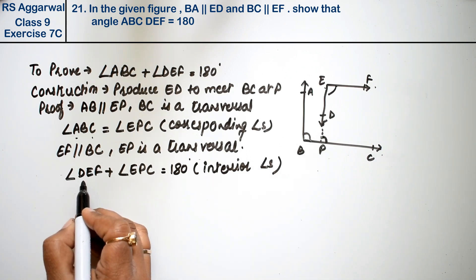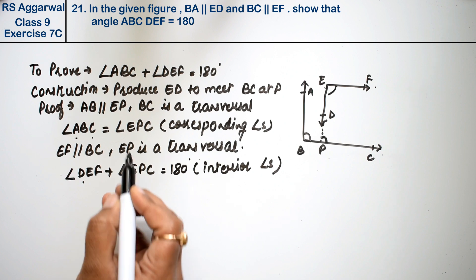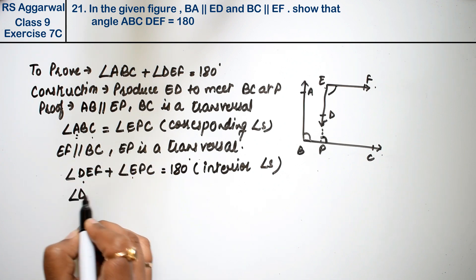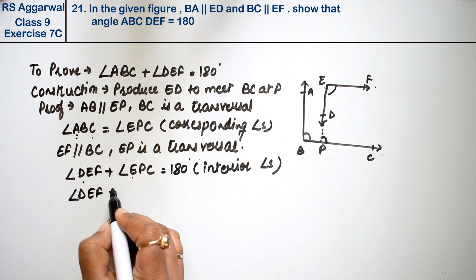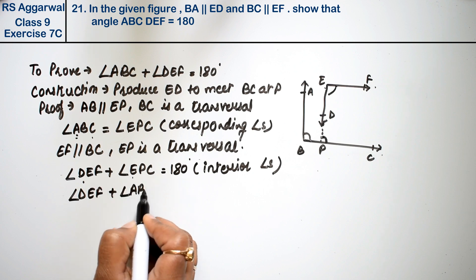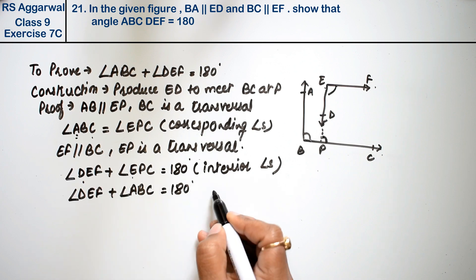Now angle DEF plus angle EPC... angle DEF plus angle ABC equals 180 degrees.